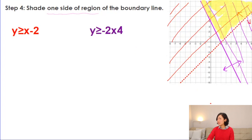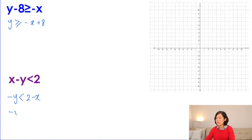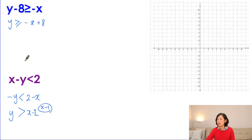Now for the second example with two inequalities. We need to find values true for both using a graph. Step one: convert to standard form — put y on one side to get y is less than minus x plus 8. For the other inequality, minus y is less than 2 minus x; multiply by minus 1 and reverse the symbol to get y is greater than x minus 2. Step two: change the inequality sign into an equal sign.